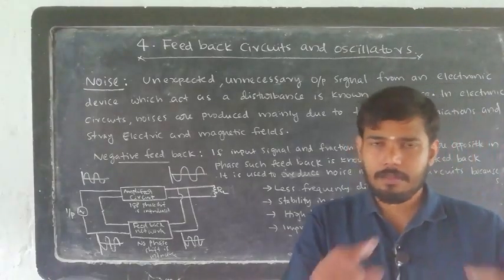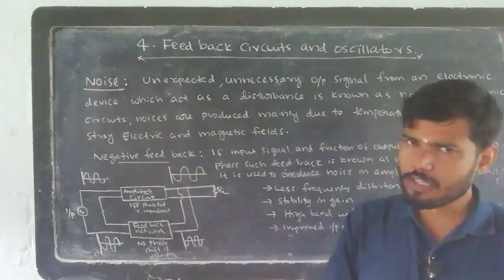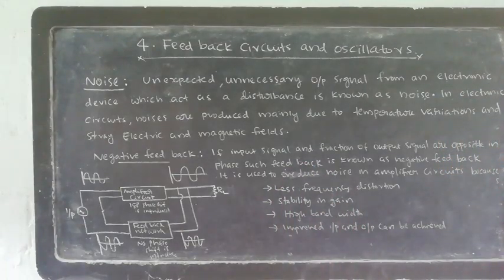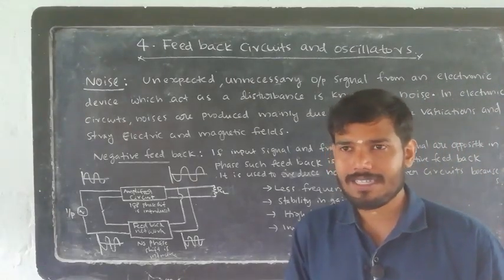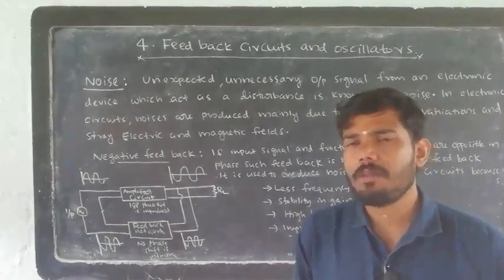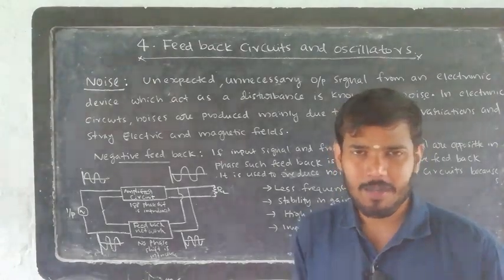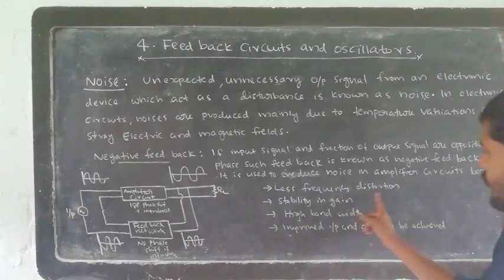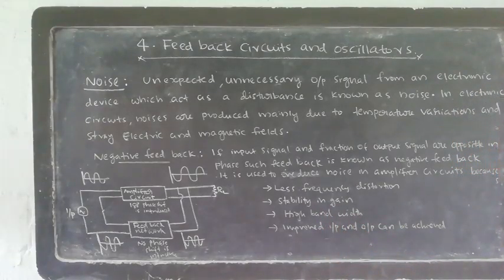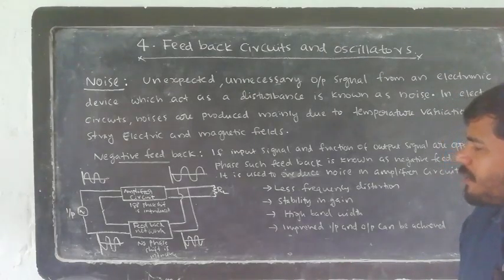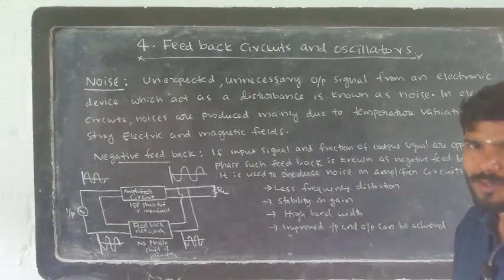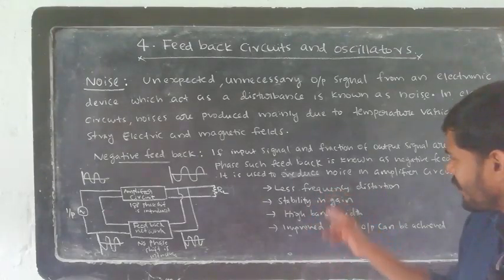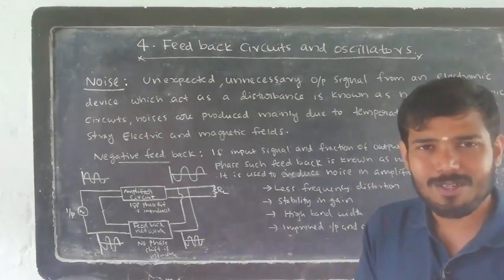The most important advantage of negative feedback is high bandwidth — over a large frequency range, gain is constant at the output. Additionally, improved input and output impedance can be achieved. With negative feedback, the output is noise-free and excellent. Due to these four reasons — noise reduction, less frequency distortion, stability in gain, and high bandwidth — we use negative feedback in amplifier circuits. Positive feedback is used in oscillators due to high frequency distortion and instability in gain, but negative feedback circuits are used in amplifier circuits to reduce noise.